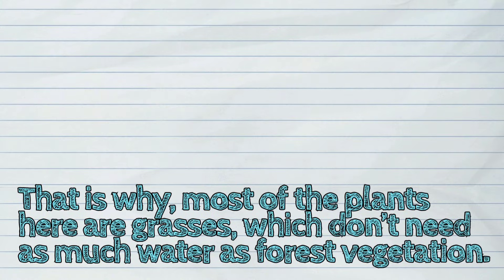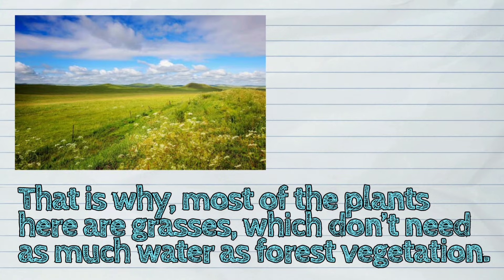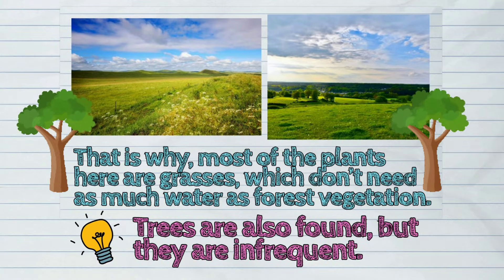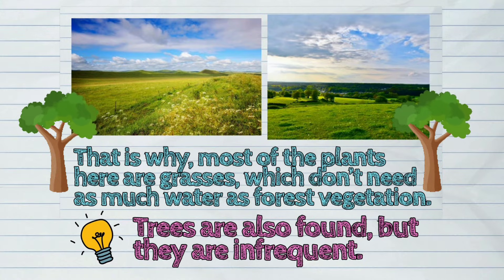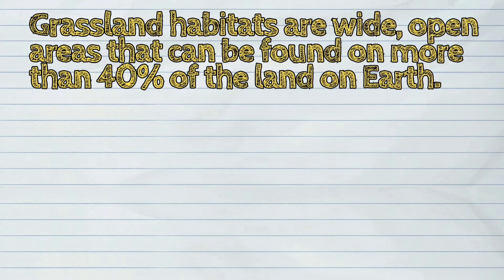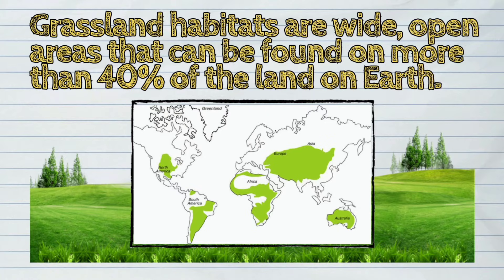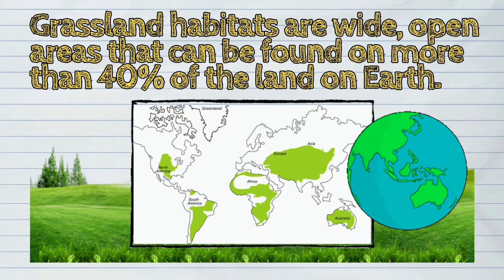That is why most of the plants here are grasses, which don't need as much water as forest vegetation. Trees are also found, but they are infrequent. Grassland habitats are wide, open areas that can be found on more than 40% of the land on Earth.